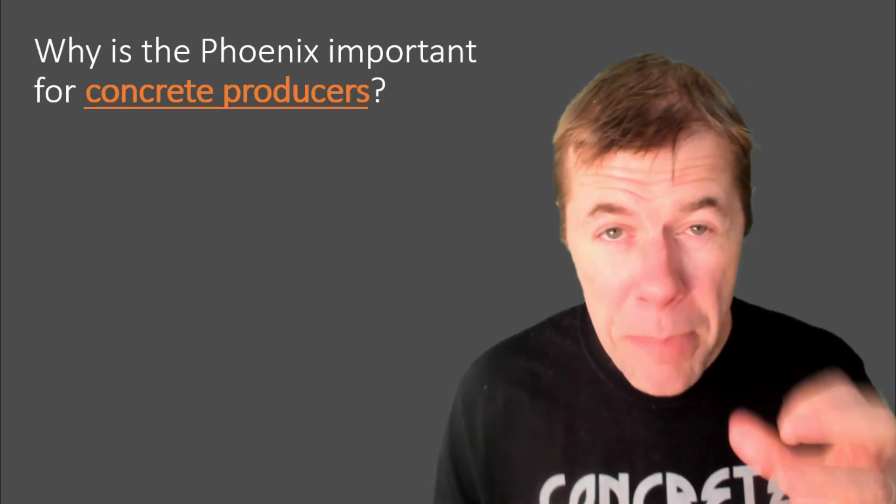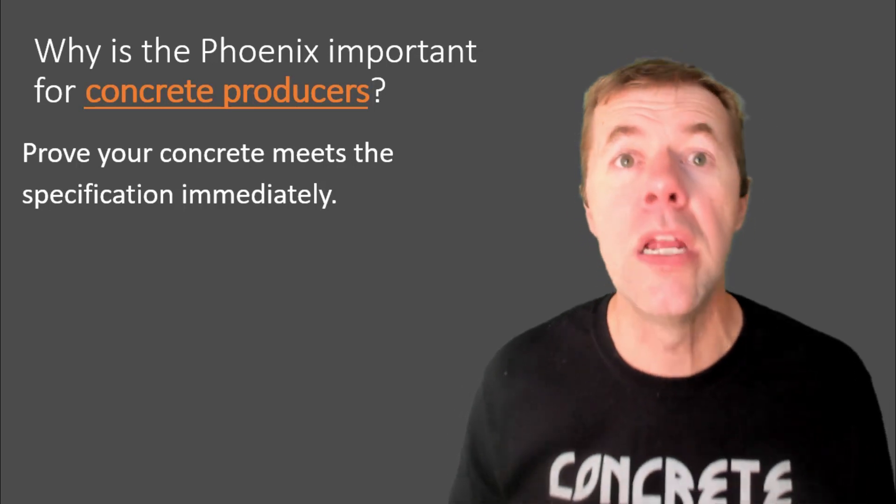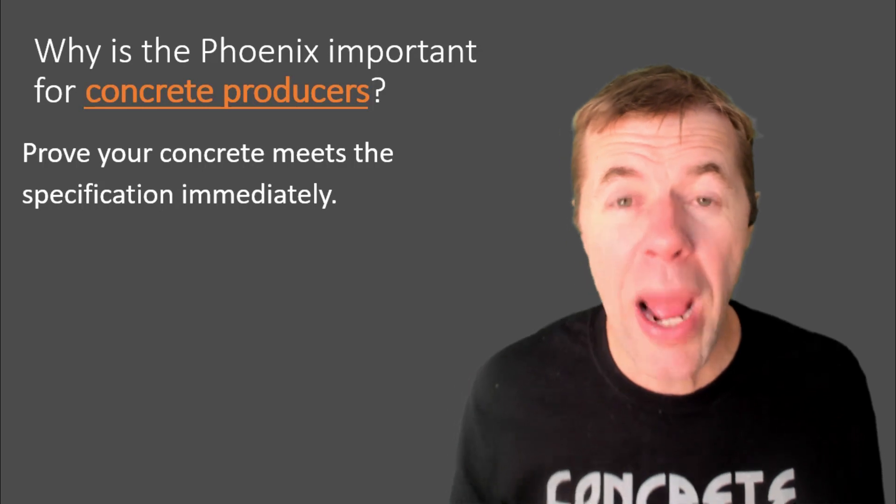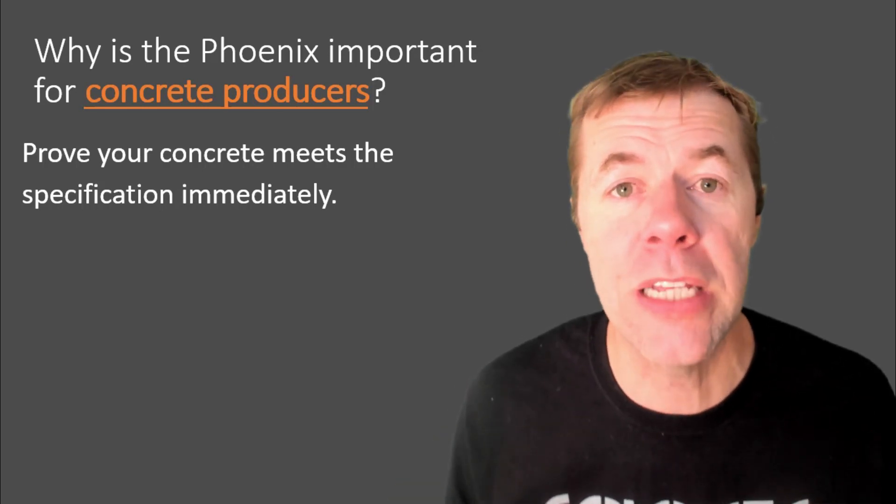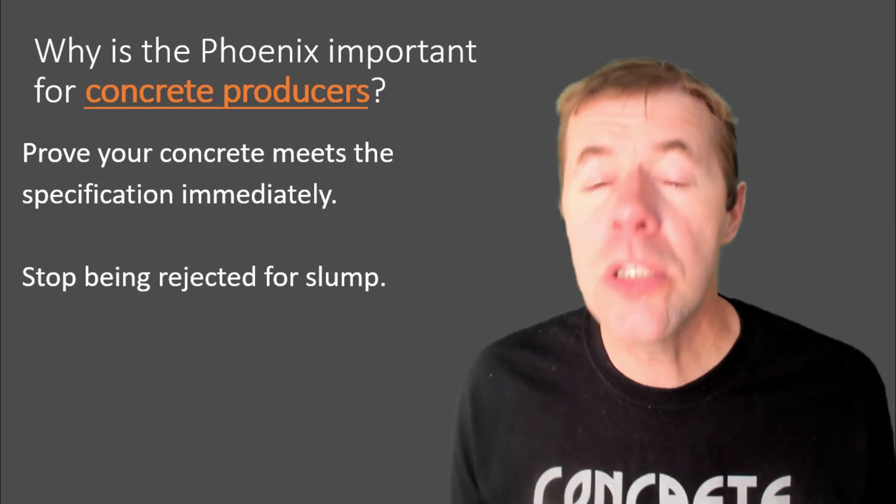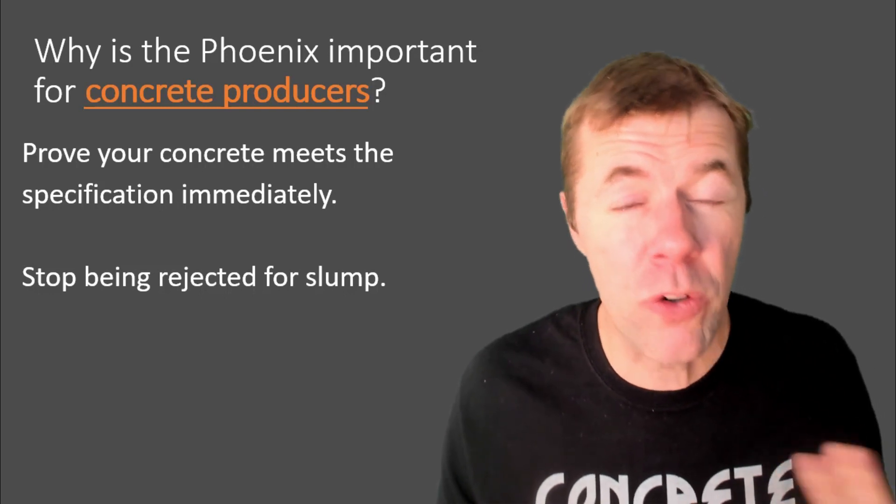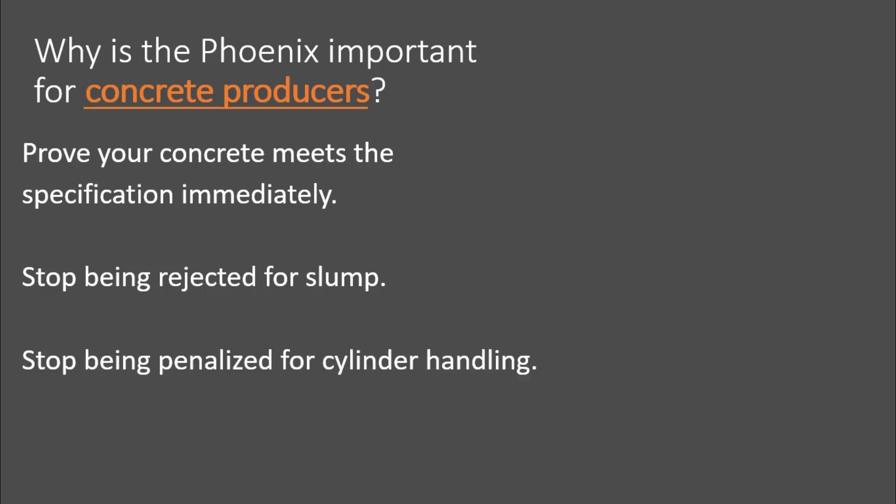Why would a concrete producer be interested in the concrete Phoenix? Well, number one, you can prove your concrete meets specification immediately, right away. That's totally awesome to know that something is great and meets specification. Number two, you can stop being rejected for slump because we shouldn't have to be turning concrete away for slump if we know the water is correct. We can stop being penalized for cylinder handling. If you can show them that you got the water-to-cement ratio and it was correct, I don't see why they can get you in trouble. I know they may try, but I think you got a lot to stand on there. You can start reducing your over-design of your concrete mixtures, reduce the cement content.